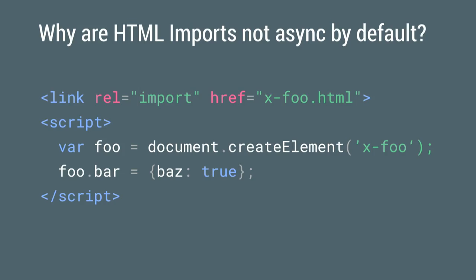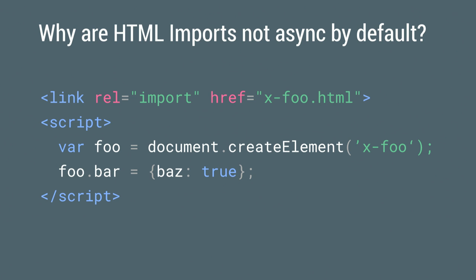If imports were async by default, developers would have to wait for a load event and couldn't immediately touch an element's properties or methods. That's why they're synchronous by default — it's a more sane experience for developers. You don't have to use them synchronously though; you can also load imports dynamically using script.